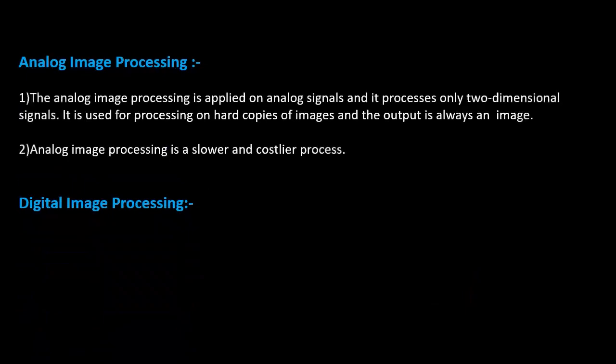Now, there are two types of image processing: analog and digital. Analog image processing is applied on analog signals and processes only two-dimensional signals. Its main use is on hard copies of images, like x-rays and printouts — analog image processing can be applied to those and the output is always an image. Analog image processing is slower and costlier, which is why we mostly do not prefer to use it.